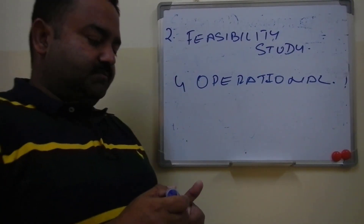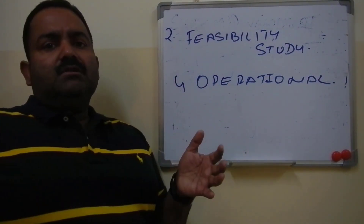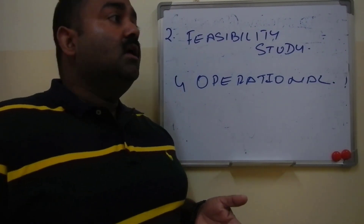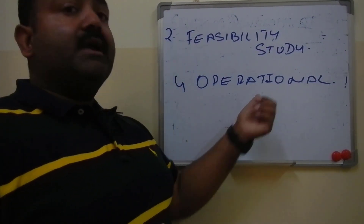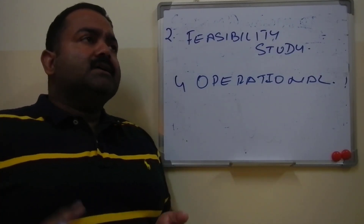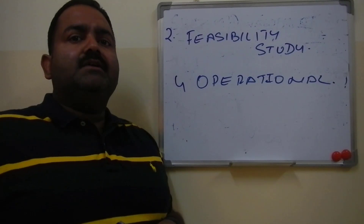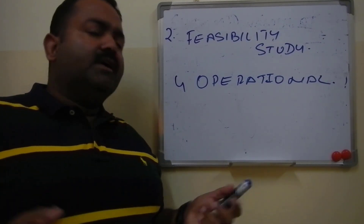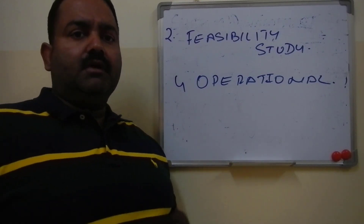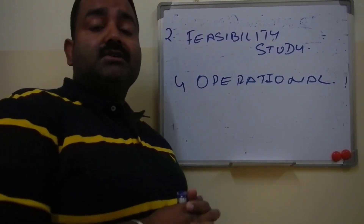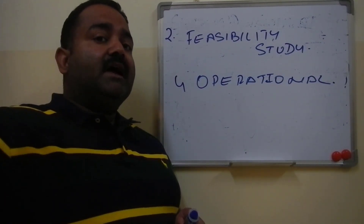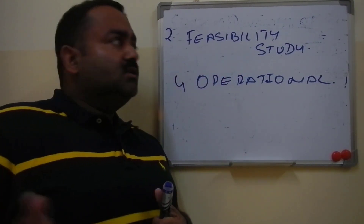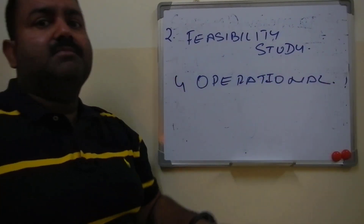Next is Operational Feasibility, which is related to the system user. Can your users actually operate the system? Sometimes systems fail because users find them too difficult to use and simply set them aside. In operational feasibility, we study whether the end user is qualified or trained enough to operate the new system. There can be more types of feasibility depending on the system and requirements.